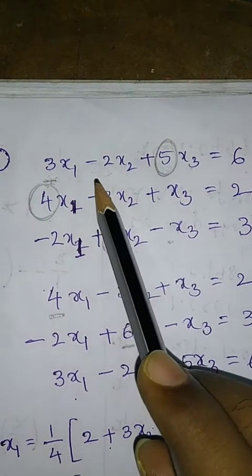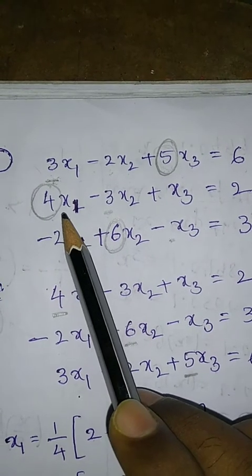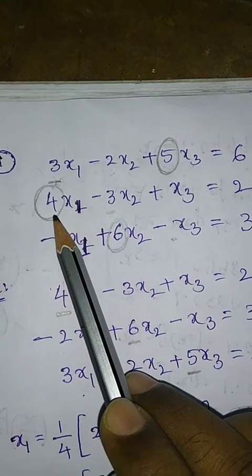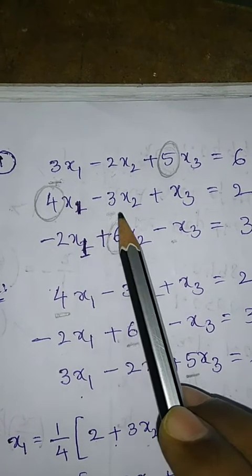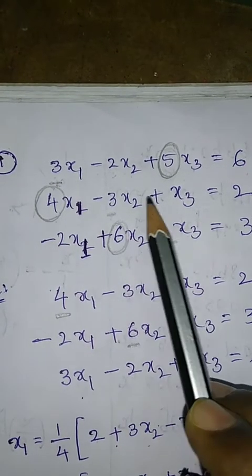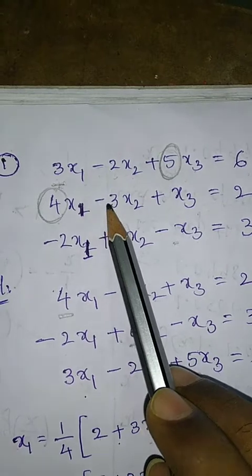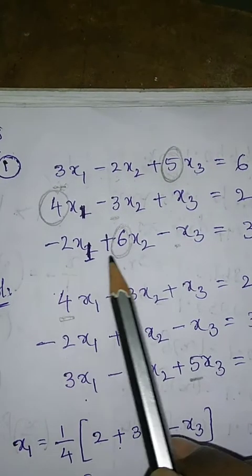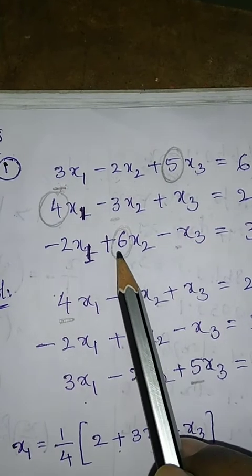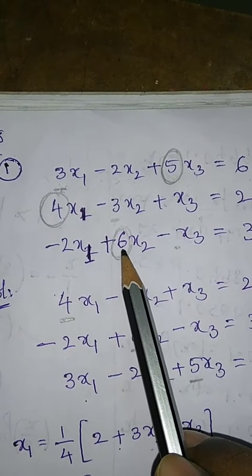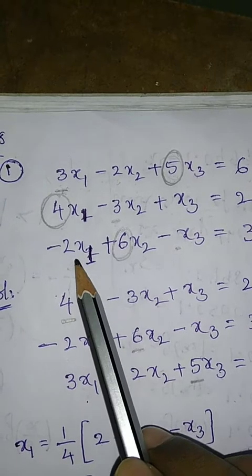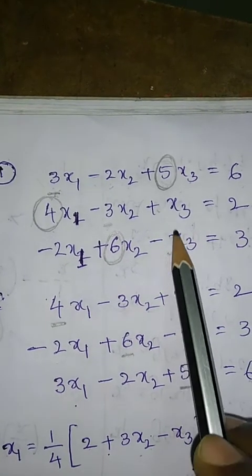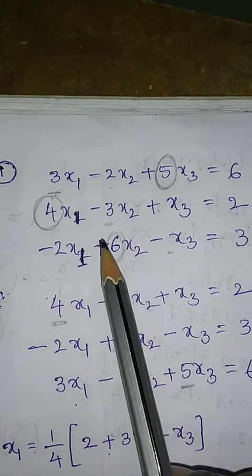In the first equation, x3 is dominant but not x1. In the second equation, x1 coefficient is dominant: 4 is greater than 3 and 1 (neglecting signs). In the third equation, 6 is the coefficient of x2 and it is dominant over x1 and x3 coefficients. So by rearranging these equations...